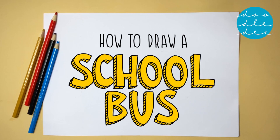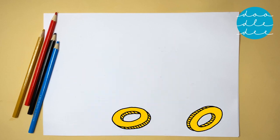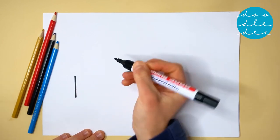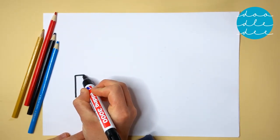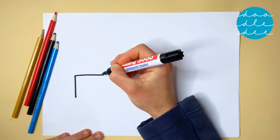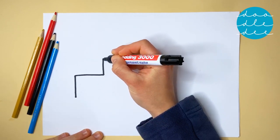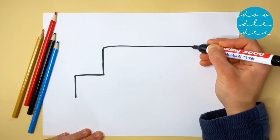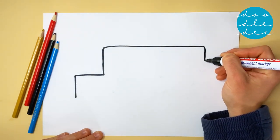How to draw a school bus! Start with a straight line, then another straight line across, then up, and all the way across, and all the way down.